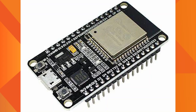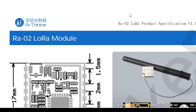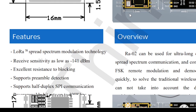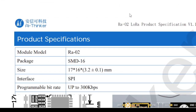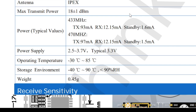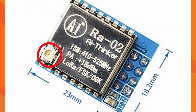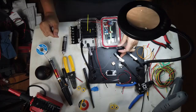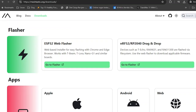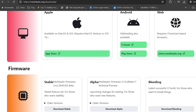A DIY Meshtastic node can be built using an ESP32 DevKit and a LoRa transceiver. The DevKit needs to have Wi-Fi and Bluetooth available. The LoRa module is a 433 MHz RA02, which has a built-in IPEX connector. An IPEX antenna can be attached directly, or an IPEX to SMA pigtail can be used to attach an SMA antenna. After hooking up all the cables, power it up and load the firmware. A special development firmware is available on the Meshtastic website.